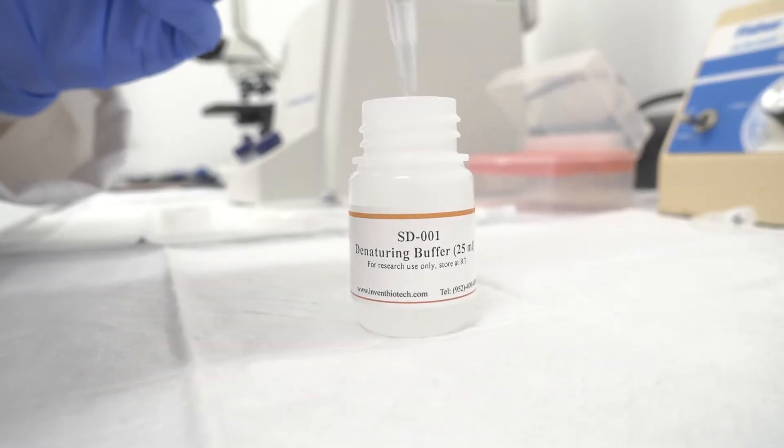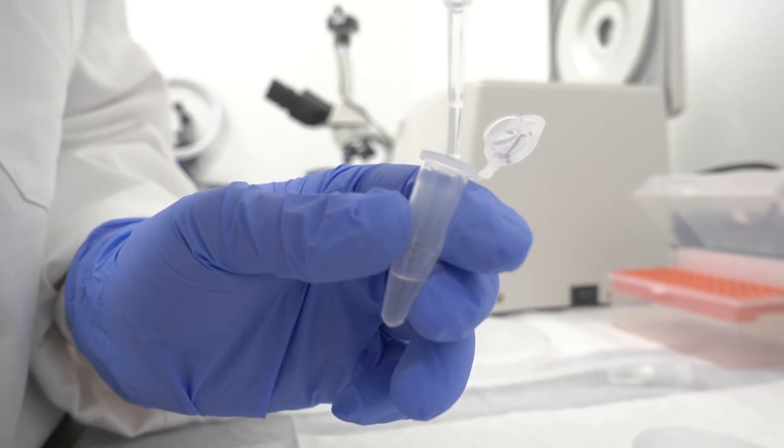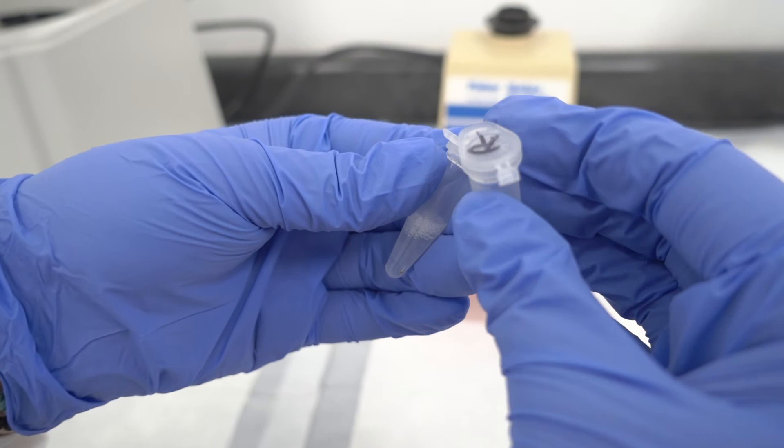We both started with 20 microliters of cell suspension and we've added 400 microliters of Invent MINUTE buffer and 400 microliters of the RIPA buffer.